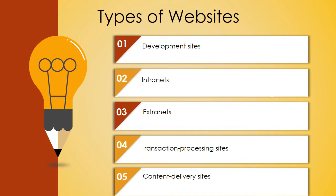The first type is a development site, which is used to evaluate web designs. Then we have intranets, which house internal information. Extranets allow outside party access. Transaction processing sites are all about e-commerce — sites like Flipkart and Amazon fall under this category. Content delivery sites are for delivering news stories, summaries, digital accounts, or digital content.